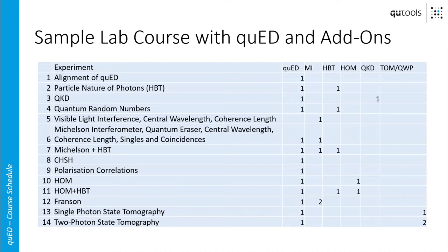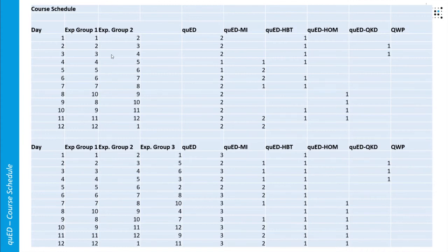To conclude our overview of the Q-Add and all its add-ons, here on this slide we have chosen 14 of the most interesting day-filling experiments you can do with the Q-Add and its add-ons. You can see what you need for each experiment, and we designed a sample lab course where if you have two Q-Adds, two Michelson interferometers, and one of each other add-on, you can have two groups working in parallel on different content each day for 12 days in total, or three experimental groups working on three different Q-Adds at the same time.